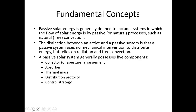Let's look at some fundamental concepts. Passive Solar Energy is generally defined to include systems in which the flow of solar energy is by passive processes, such as natural convection. The distinction between an active and a passive system is that a passive system uses no mechanical intervention to distribute energy, but relies on radiation and free convection. A passive solar system generally possesses five different components: a collector, some collector arrangement, absorber, thermal mass, a distribution protocol, and some sort of control strategy.